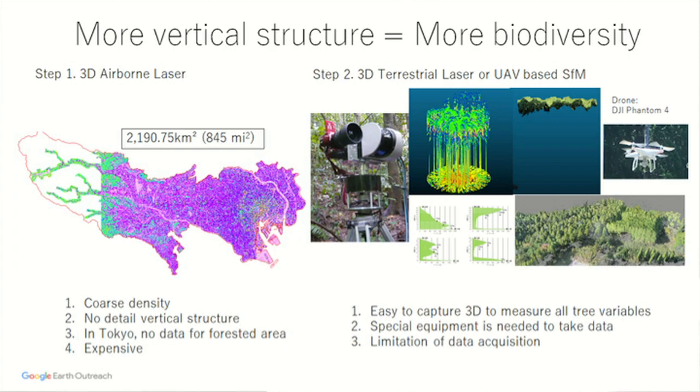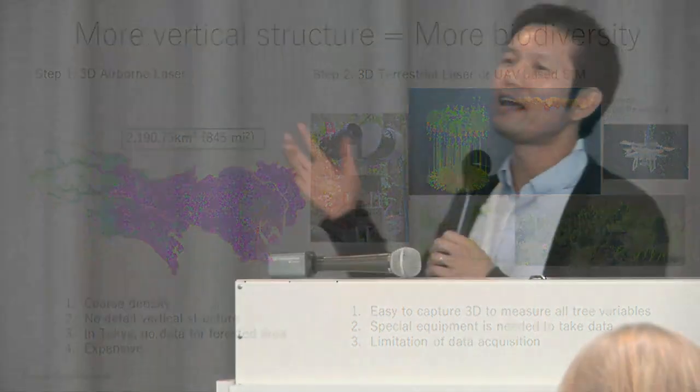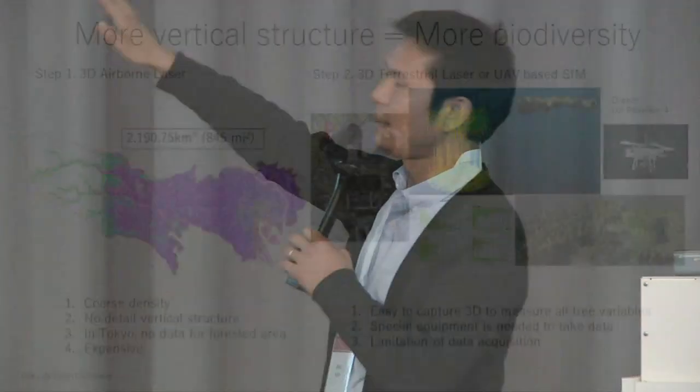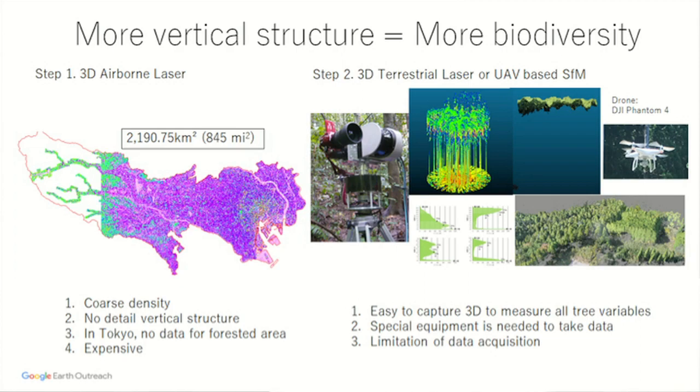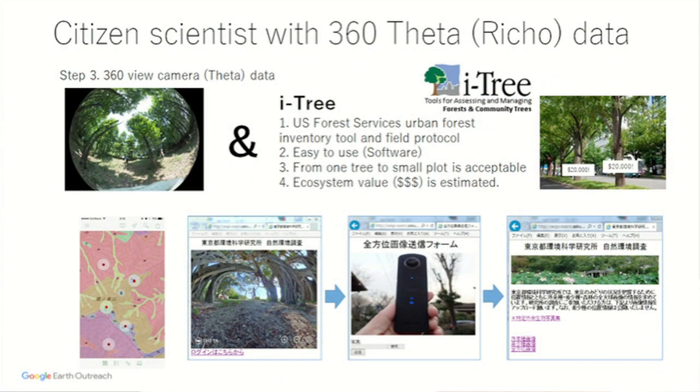How do we get 3D data? Initially we focused on airborne laser. Airborne laser is fine, but it's very expensive. In Tokyo, most of the forested area on the left is missing — most of the densely populated area, airborne laser doesn't cover. We then tried terrestrial laser, but coverage is limited. We tried using drones, but drones are prohibited over the city like Tokyo. So what we found is that maybe we can use citizen scientists to collect more data.